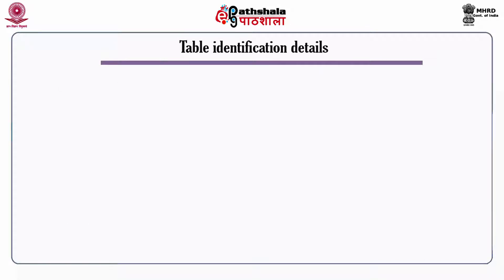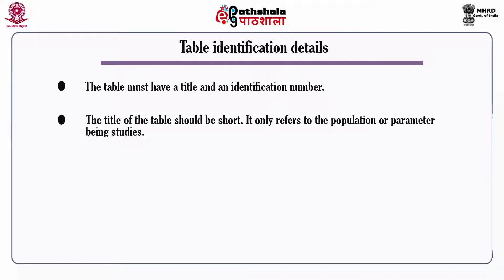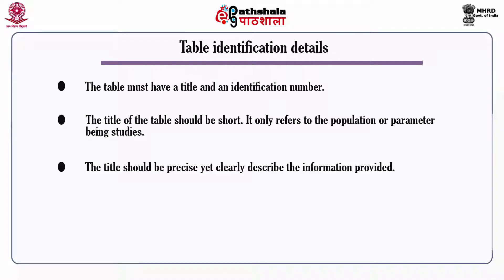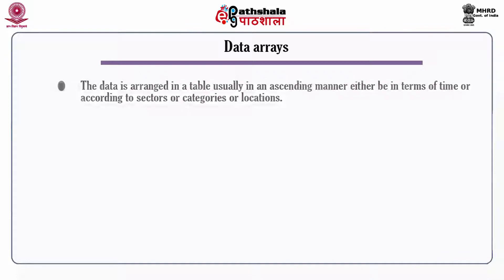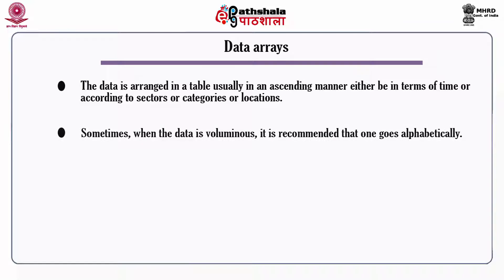Table identification details: the table must have a title and an identification number. The title should be short, referring only to the population or parameter being studied, yet clearly describe the information provided. The numbering of tables is usually in serial order, generally using Arabic numbers. Data arrays: data is arranged in a table usually in an ascending manner, either in terms of time, sectors, or categories of locations. When the data is voluminous, it is recommended to arrange it alphabetically.